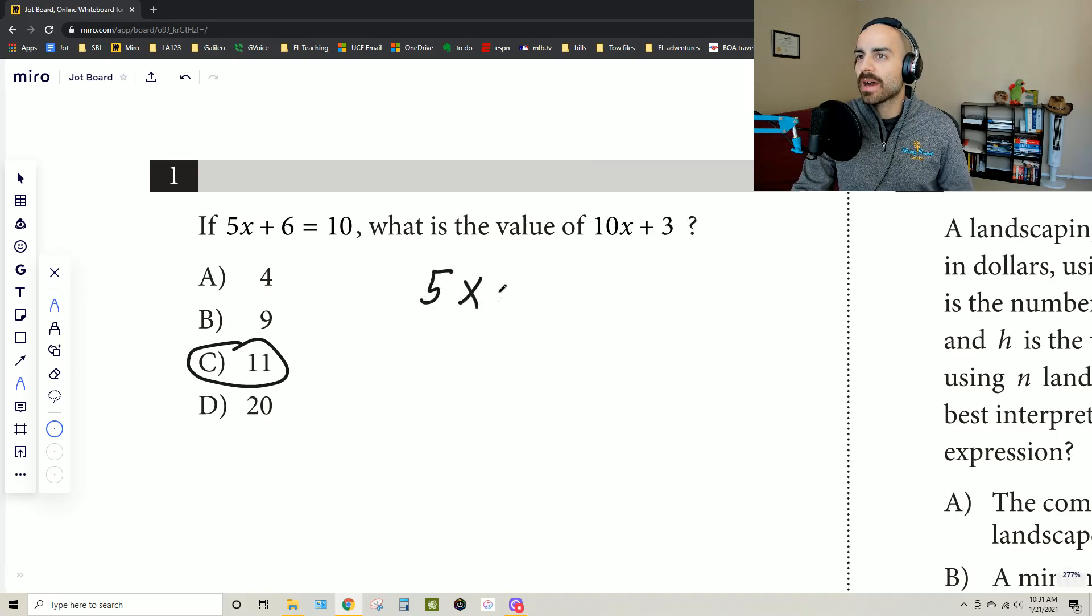Well, what I mean by that is we have 5x plus 6 equals 10, and we wanted to make it look like 10x plus 3, or at least this part we do. Well, I know that if I double this, I'll get 10x plus 12, so at least that takes care of the 10x, and then that would equal 20.